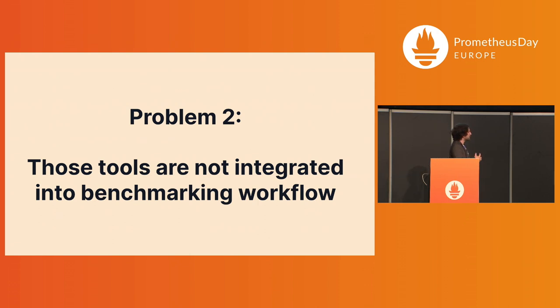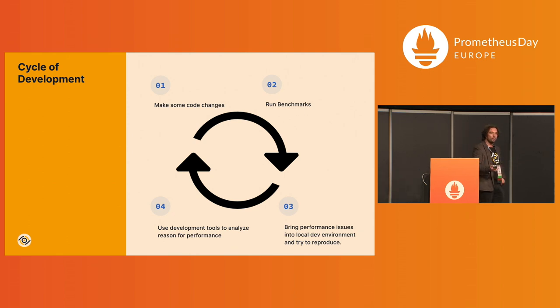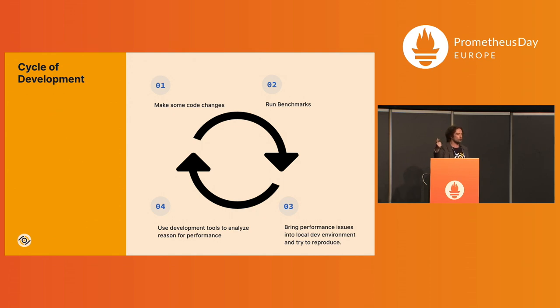The second problem is that these tools are not integrated into your benchmarking flow. Often what happens is that developers get into this cycle where they make a change, they run a benchmark, they see that something is slow, and then they try to reproduce this locally on their local machine in order to use these other tools to get an idea of why the performance is the way it is. Then they analyze this data, they make code changes, and the cycle starts again.